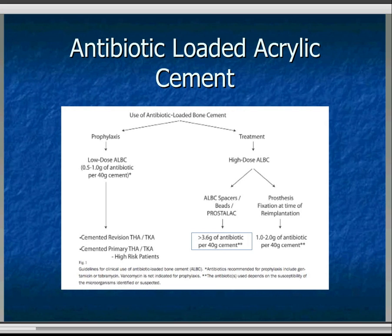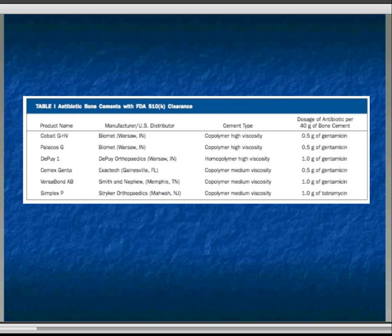These are 0.5 to 1 gram of antibiotic per 40 grams of cement. The other area that antibiotic-loaded cement is used is in the treatment of infections. In this case, it's a much higher dose, and for beads and spacers we use more than 3.6 grams per 40 grams of cement.